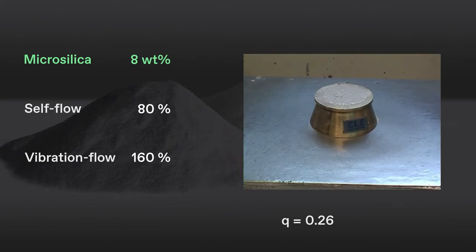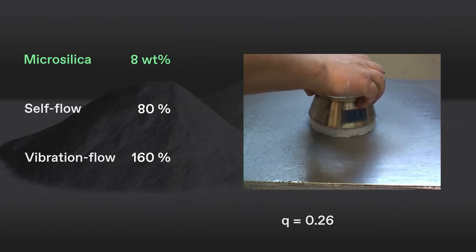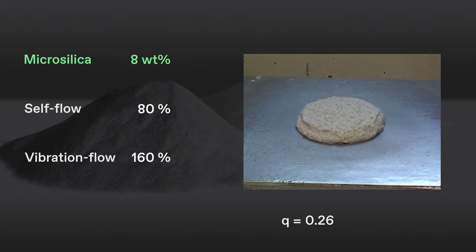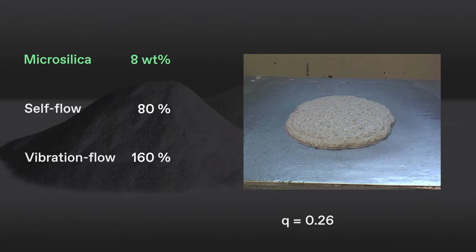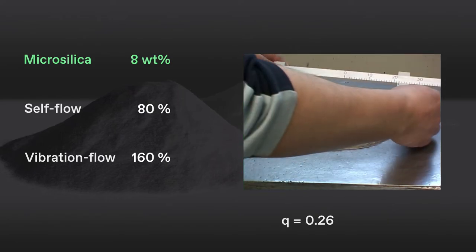Finally, we continue by adding an additional 5% Elkem microsilica, resulting in a total dosage of 8% in the mix. This demonstrates how the Q value is strongly influenced by the amount of superfines.